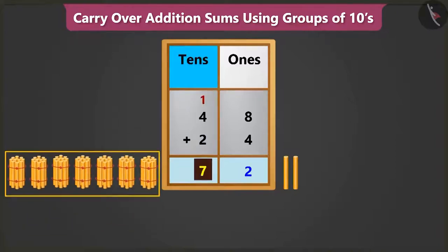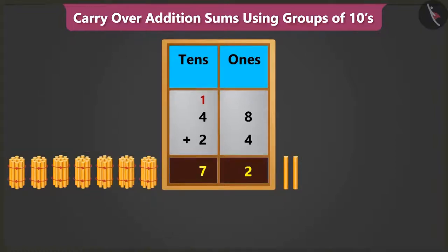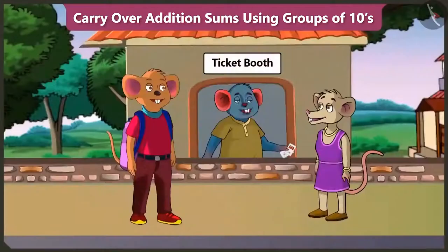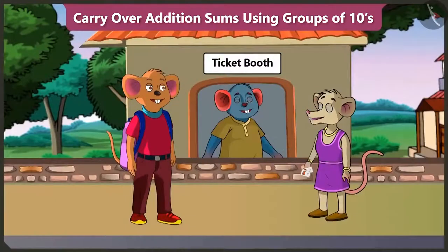Now, 7 tens added to 2 ones makes 72. So, we have to pay 72 rupees. Please take 72 rupees. Take your ticket. Let us go and sit in the bus.